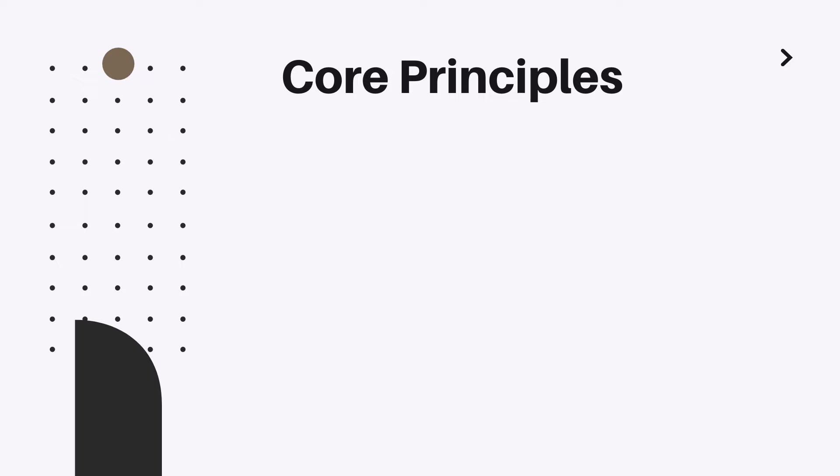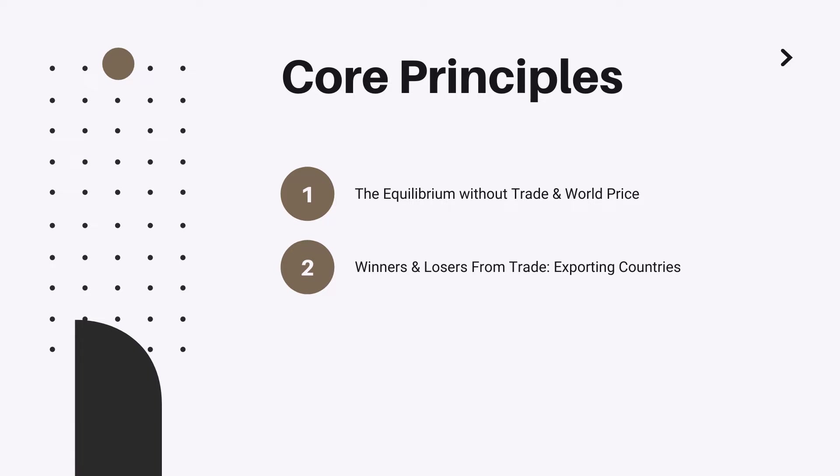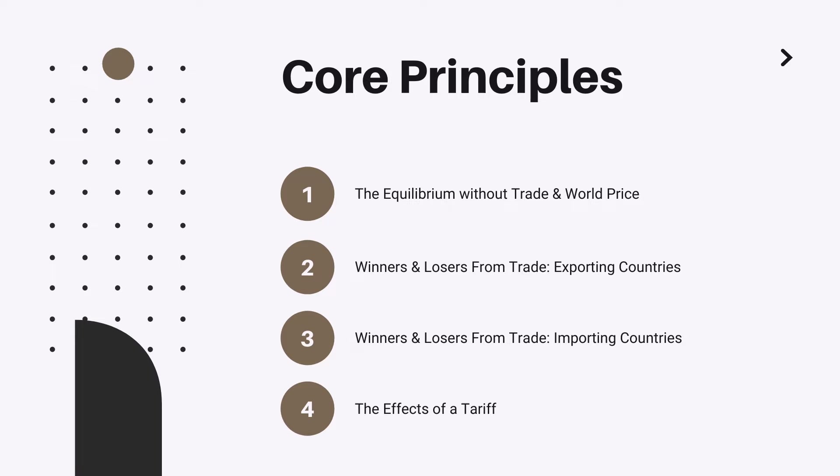Today we will speak about four core concepts. First, the equilibrium without trade and world price. Next, winners and losers from trade. We will discuss the cases of exporting countries and importing countries separately. And last but not least, we will discuss the effects of a tariff.